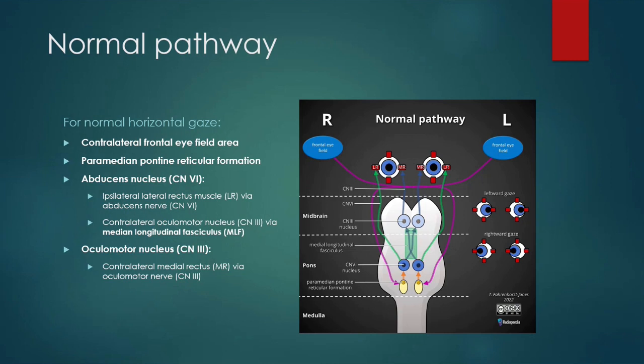Taking leftward gaze as an example in the normal pathway: horizontal leftward gaze originates in the contralateral eye field area, which would be the right eye field area. This activates the paramedian pontine reticular formation, which goes on to activate the sixth nerve nucleus. This in turn leads to contraction of the ipsilateral lateral rectus muscle and the contralateral medial rectus muscle via the medial longitudinal fasciculus, resulting in leftward gaze.